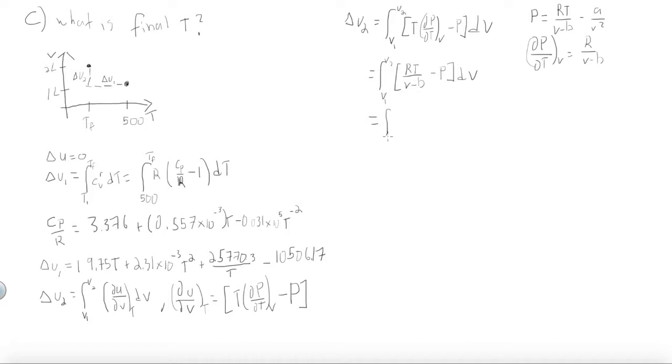And knowing the Van der Waals equation, we can just rearrange. And we know that the relationship is actually RT over V minus B minus P is the same thing as A over V squared.